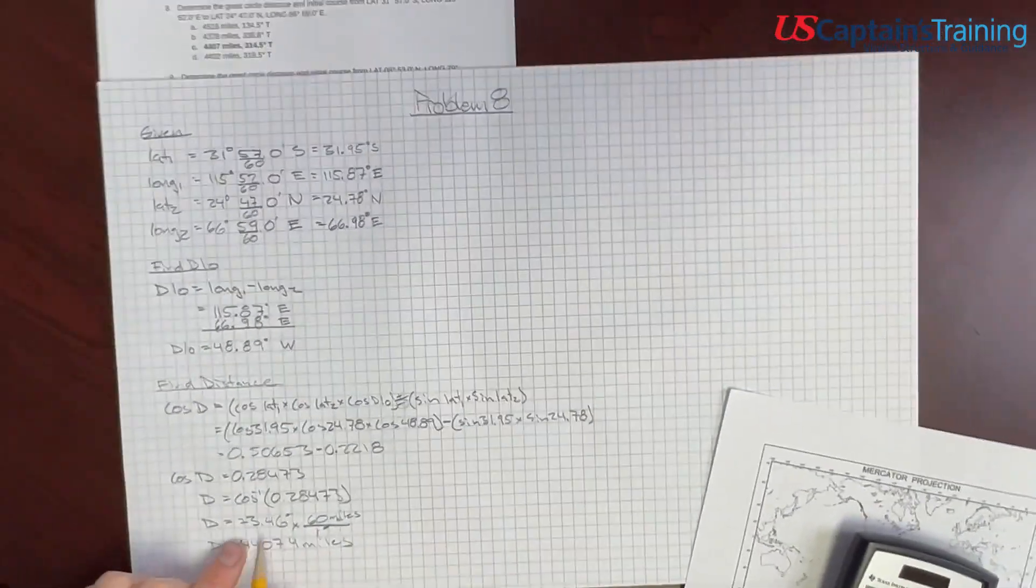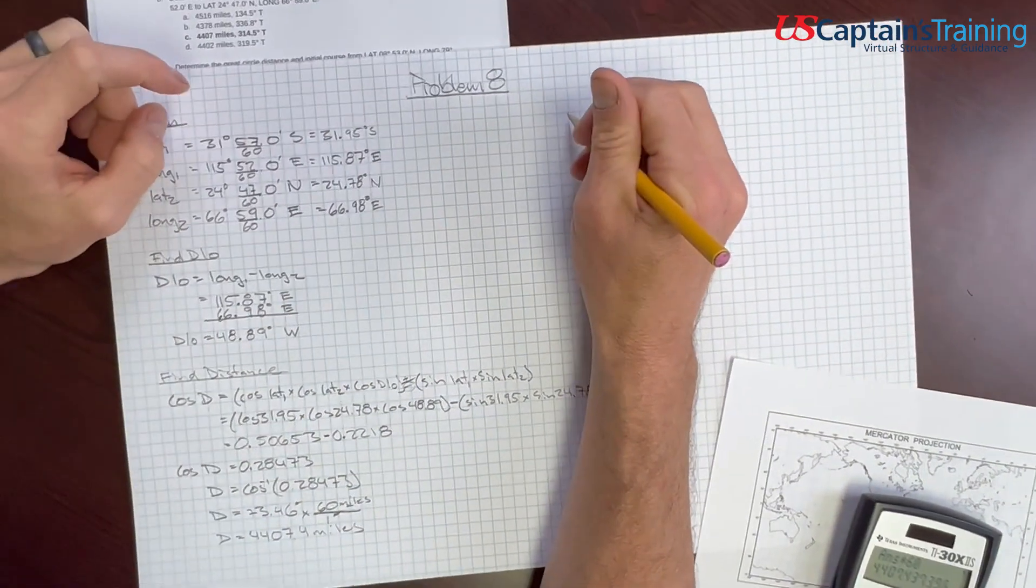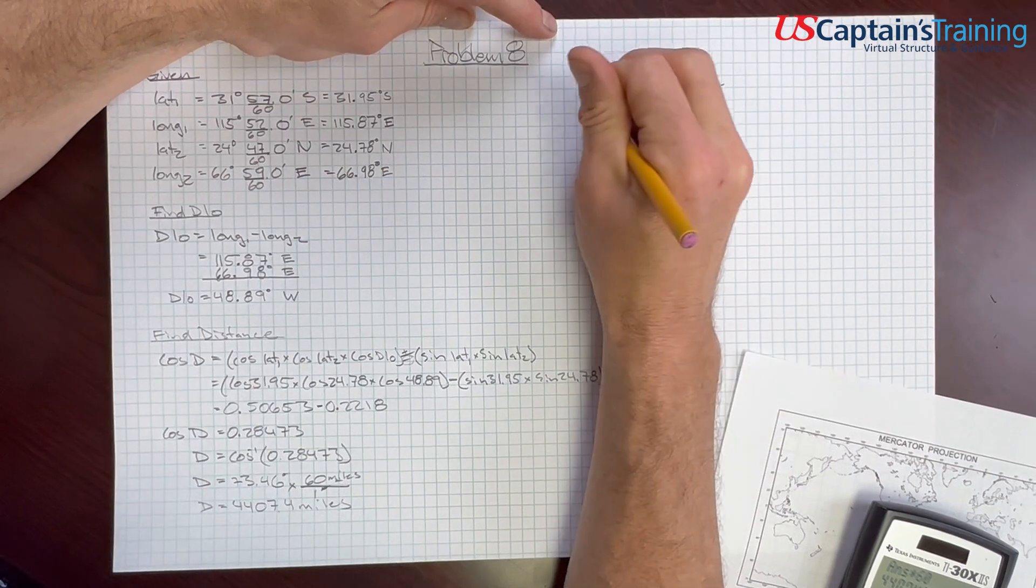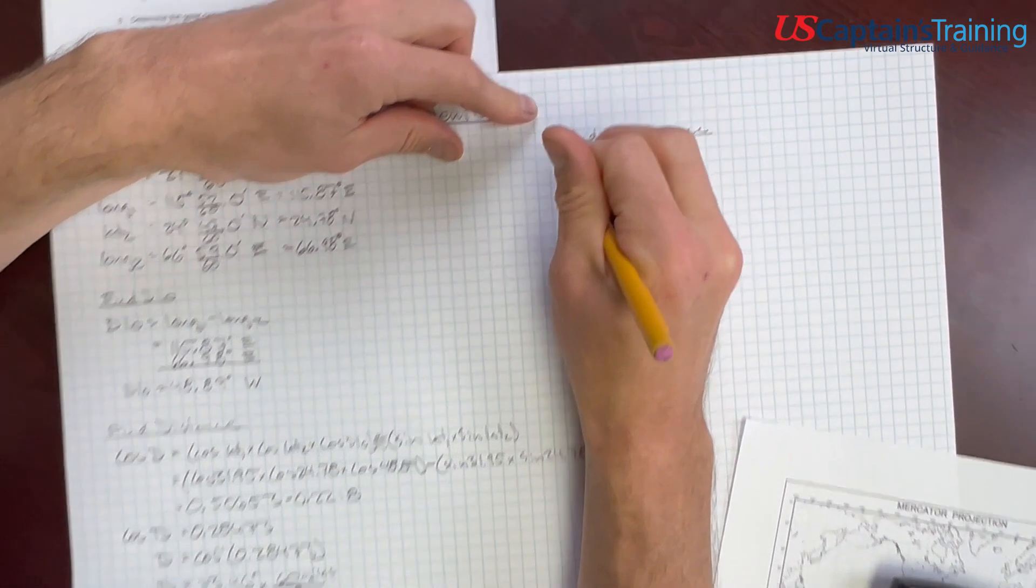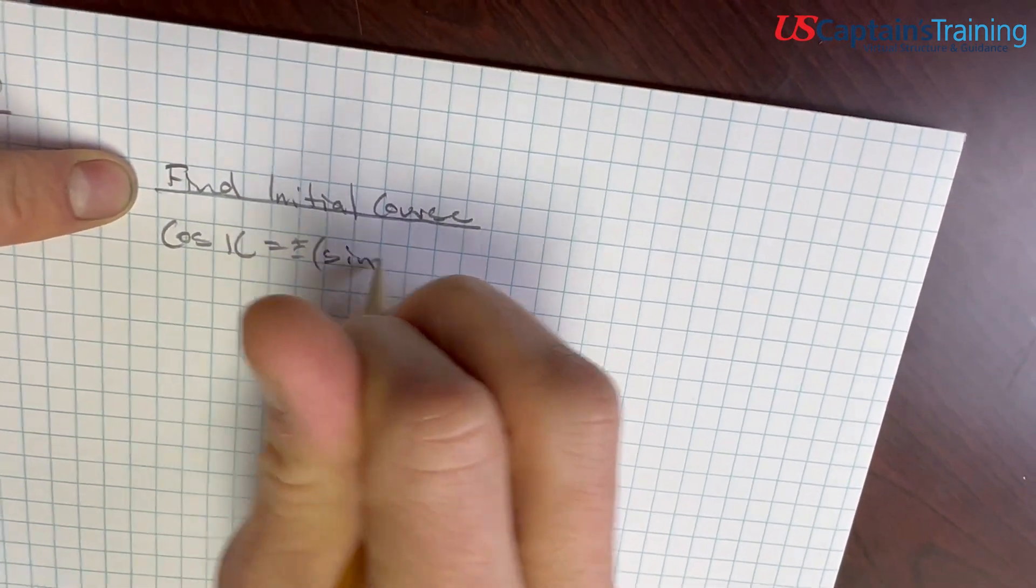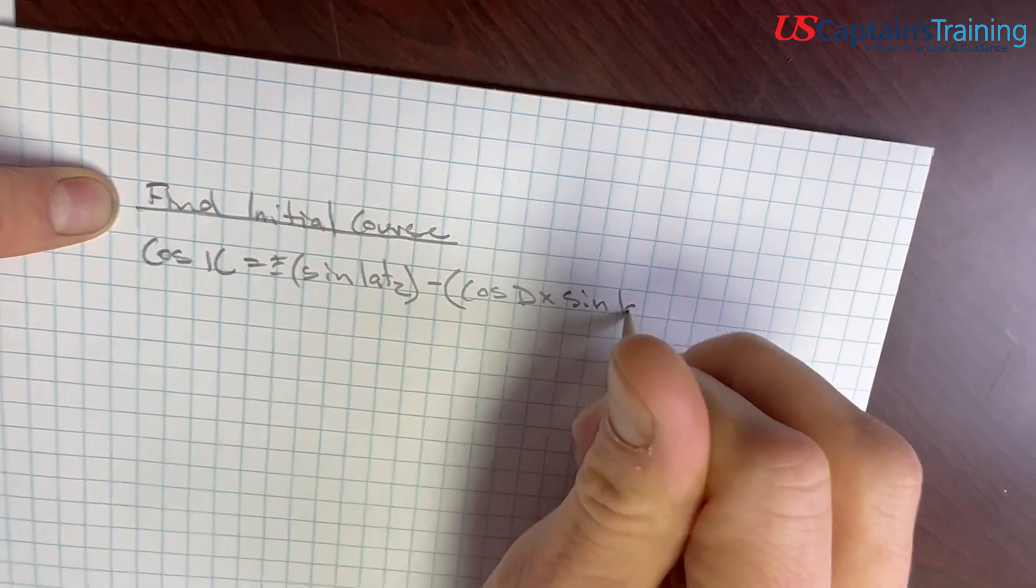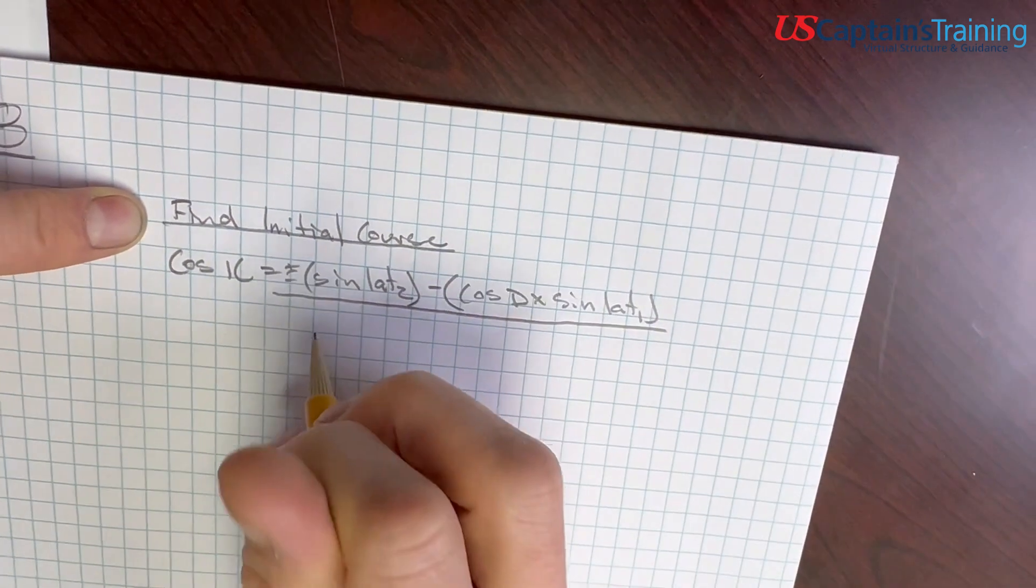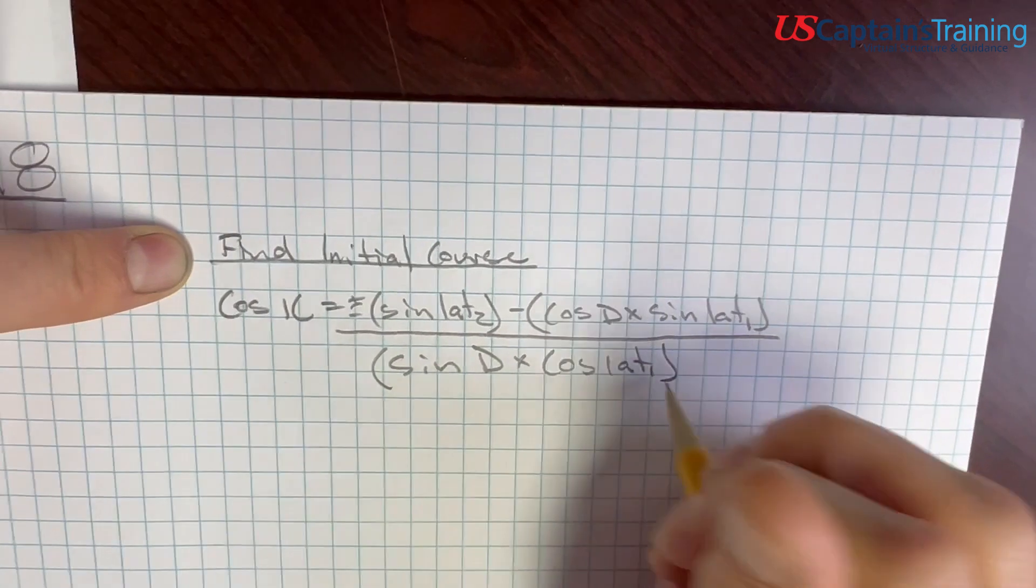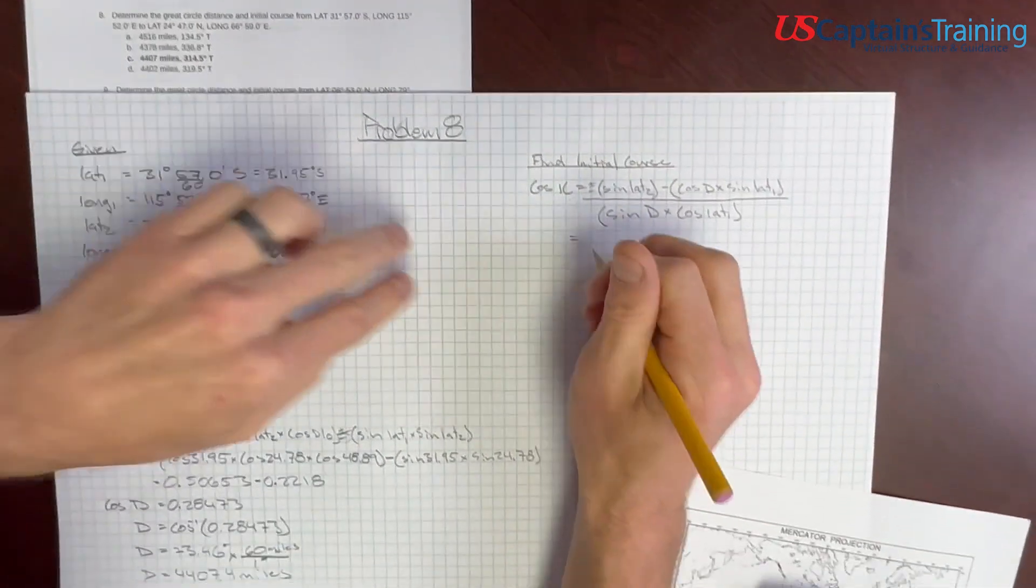So, in the next step, we'll use distance in degrees. So, let's take a look. We say, find, we need to find initial course. And to do that, we use this formula. We say, cosine initial course equals plus or minus sine lat 2 minus cosine distance times sine lat 1. And all of this goes over the sine of the distance times the cosine of lat 1. And now, let's keep chugging away. Plus or minus? Well, we cross the equator, so we're minus.